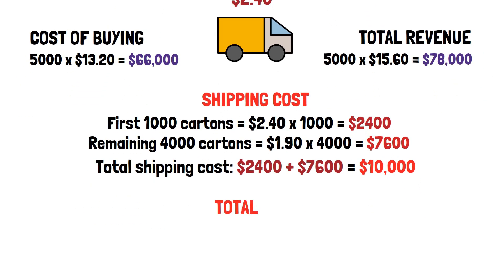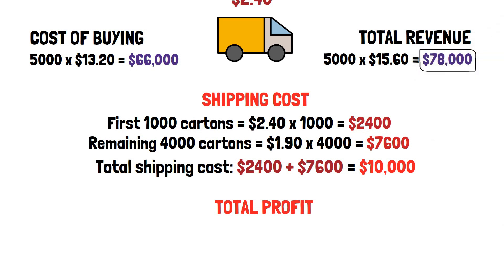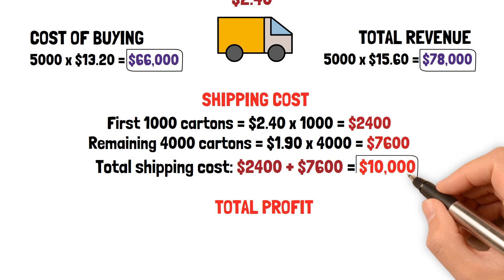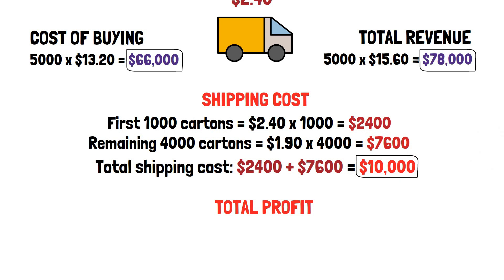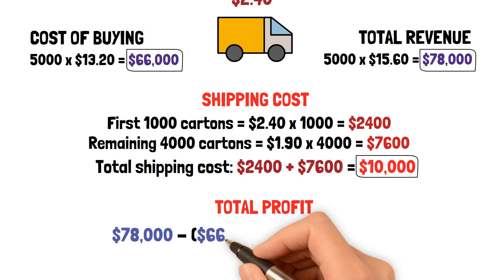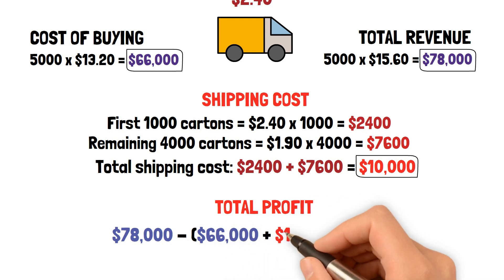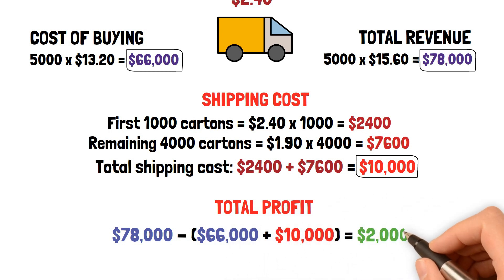Therefore, the wholesaler's total profit would be: total revenue $78,000, minus total cost of goods sold $66,000, minus total shipping costs $10,000. So the total profit is $78,000 minus $66,000 minus $10,000, which is $2,000 total profit.